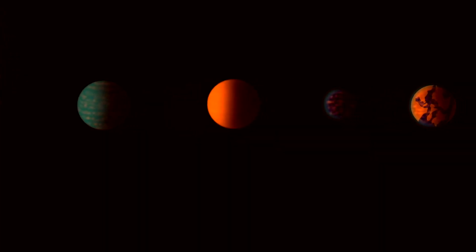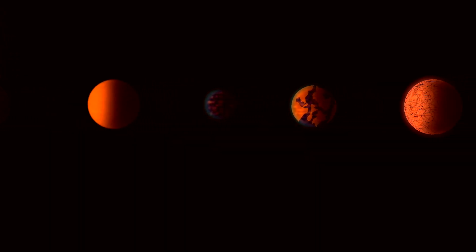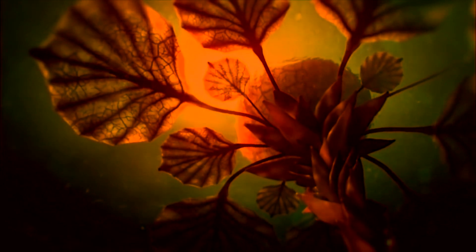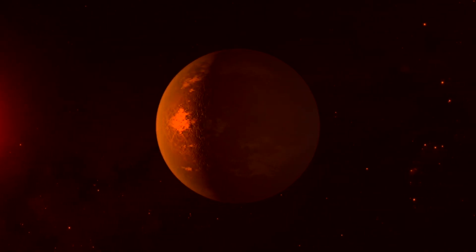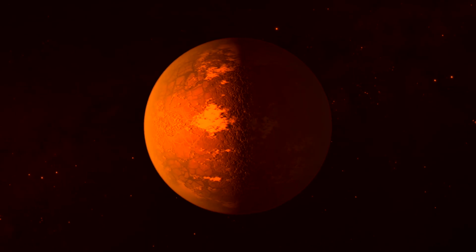But the Trappist-1 system gets even more interesting. It is very probable that at least one of these planets lies within the habitable zone, where liquid water can exist on the surface. The best candidate for habitability is the fourth planet in the system, Trappist-1e.